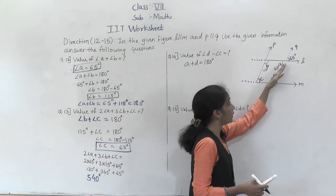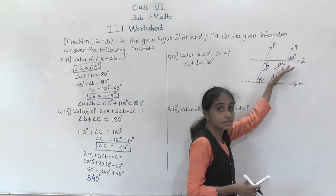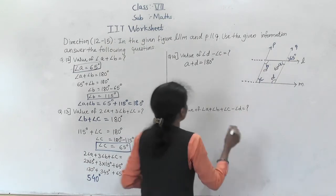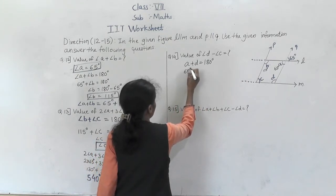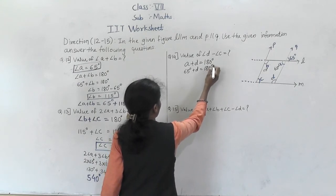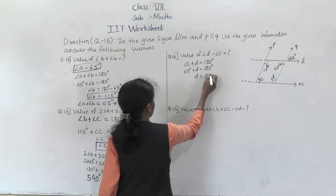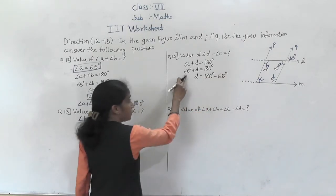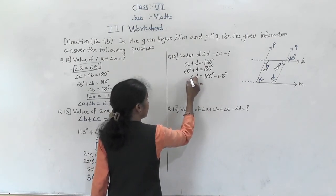Angle A and angle D are interior angles on the same side of the transversal, so they are supplementary. We have 65 degrees plus angle D equals 180 degrees. Therefore angle D equals 180 degrees minus 65 degrees.